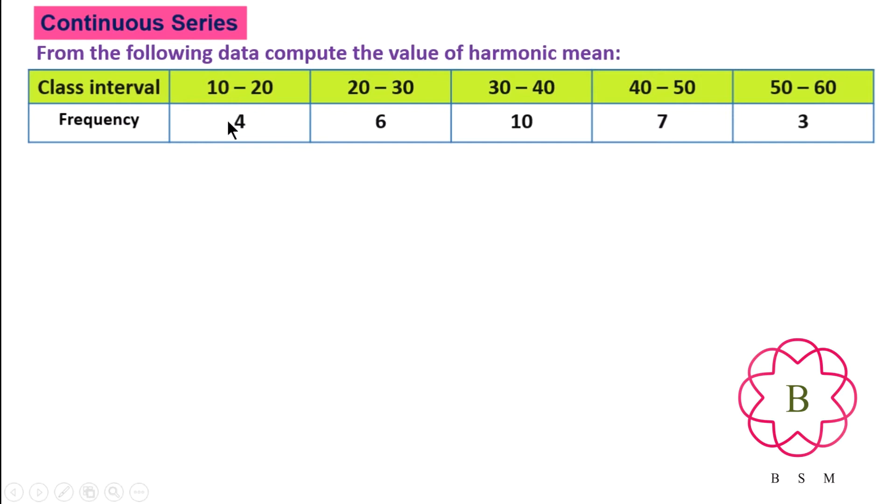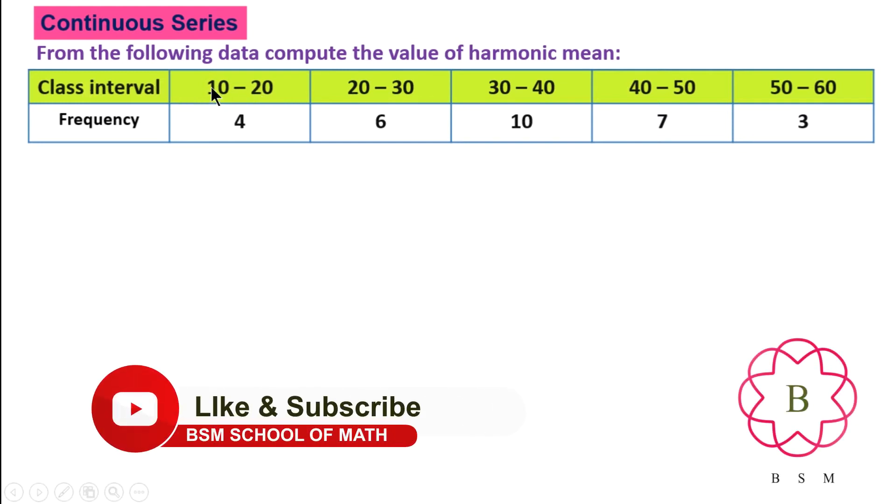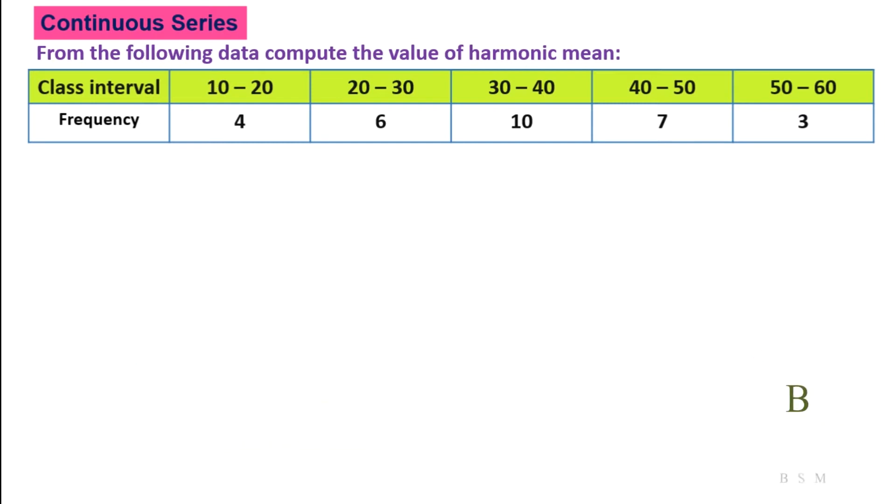For frequency value 4, in the continuous series 10 to 20, 20 to 30, 30 to 40, 40 to 50. This is class interval - above or less than or greater than. When the value of 10 is there, that is the value from 10 to 20.